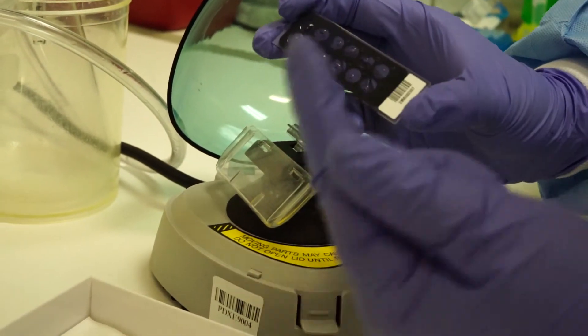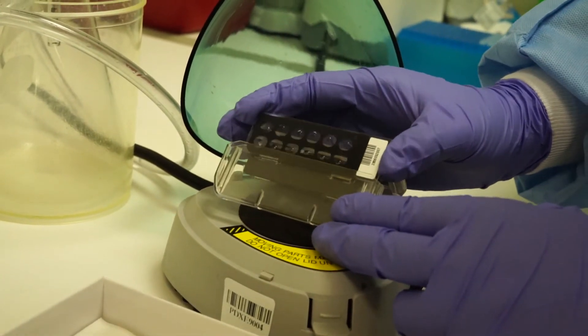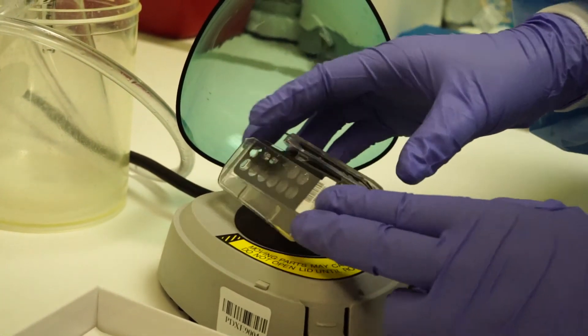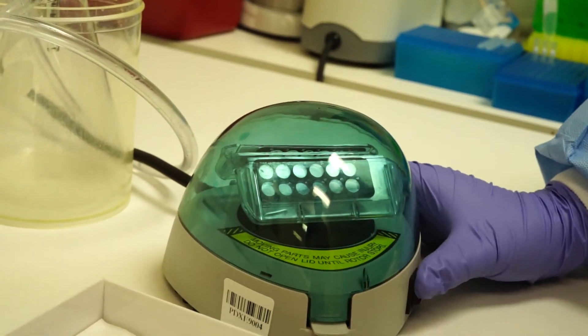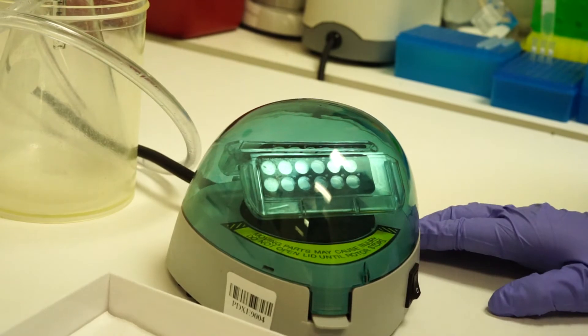Make sure the array faces out and load carefully. There should always be a blank loaded for balance. Close the centrifuge and allow to spin for 30 seconds.